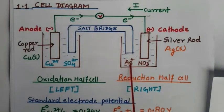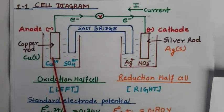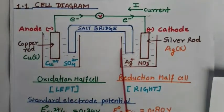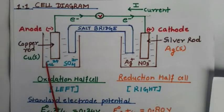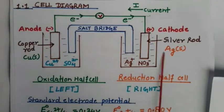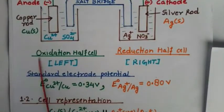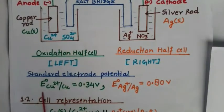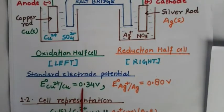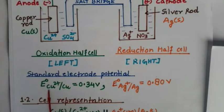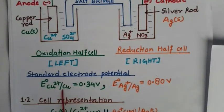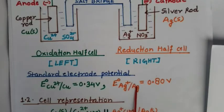The salt bridge helps complete the circuit and maintain the electrical neutrality of the solutions in the two half cells. We represent the cell by writing the oxidation half cell on the left and the reduction half cell on the right. The standard reduction potential of the copper electrode is 0.34 volt. The Cu²⁺/Cu pair and the Ag⁺/Ag pair are known as redox couples — the oxidized and reduced forms of each element respectively.